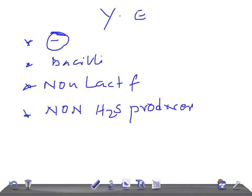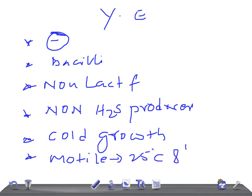Gram-negative bacilli, non-lactose fermenters, non-H2S producers. The other important point about this bacteria is they have cold growth. They are motile at the temperature around 25 degrees Celsius and non-motile at the temperature of around 37 degrees Celsius.